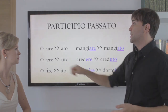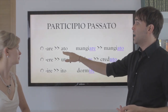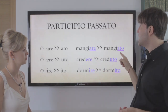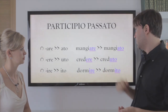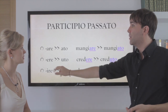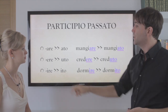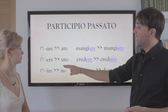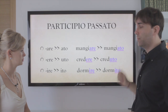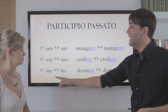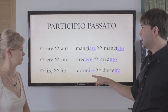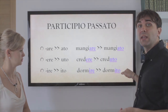For instance, first group: are becomes ato — mangiare becomes mangiato. This is the past participle, participio passato. Second group: ere becomes uto — credere becomes creduto. Third group: ire becomes ito — dormire becomes dormito.